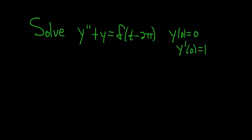Solve y double prime plus y equals the Dirac delta of t minus 2π solution. We'll start by taking the Laplace transform of both sides.